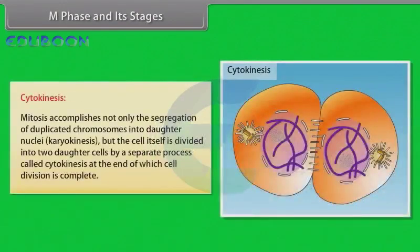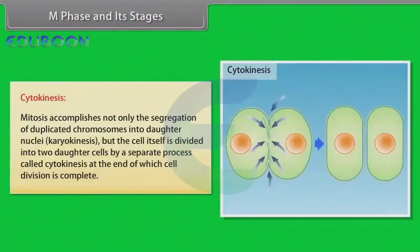Mitosis accomplishes not only the segregation of duplicated chromosomes into daughter nuclei, karyokinesis, but the cell itself is divided into two daughter cells by a separate process called cytokinesis, at the end of which cell division is complete.